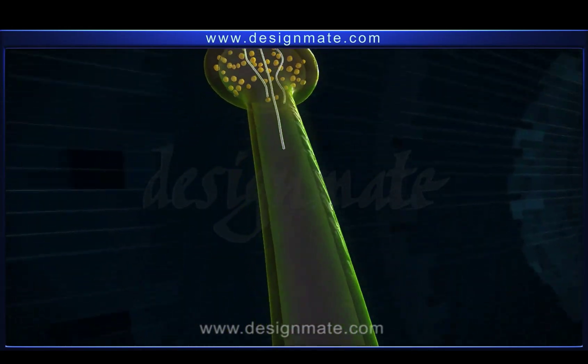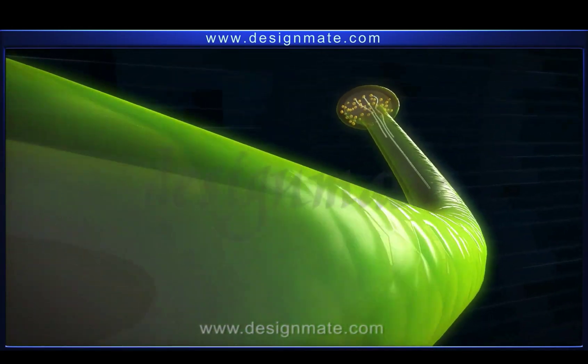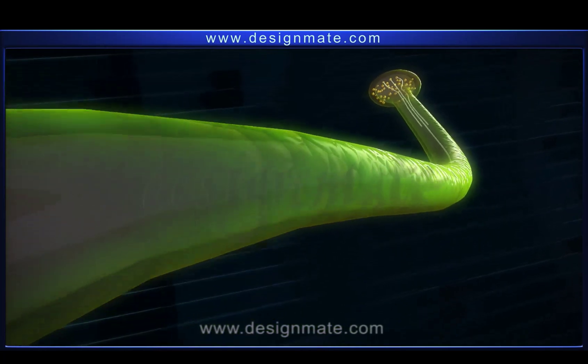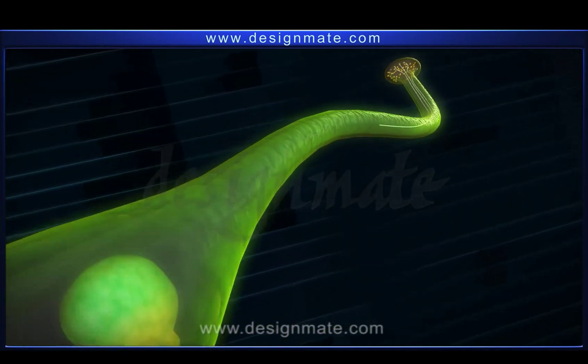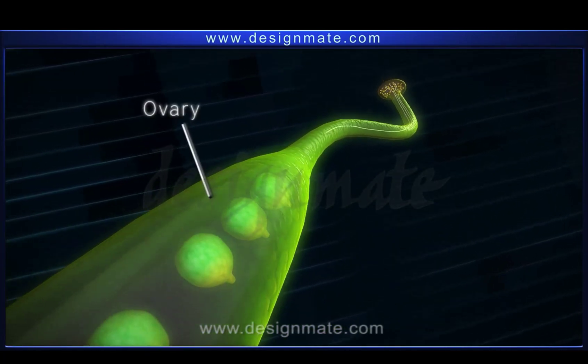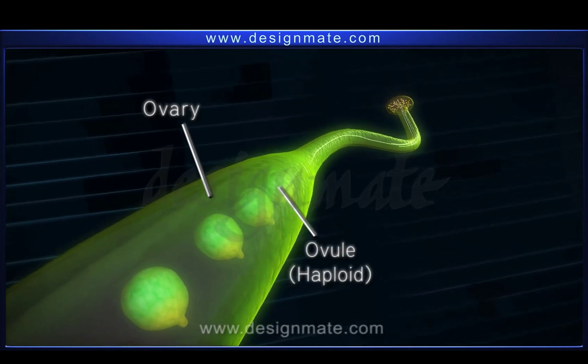The innermost whorl of the flower is the gynecium, which is the female reproductive structure — an ovary consisting of ovules.